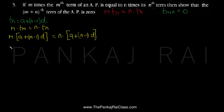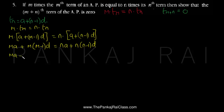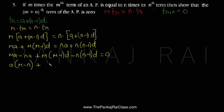Opening the brackets, we get: m·a plus m(m−1)·D equals n·a plus n(n−1)·D. Taking everything to the left-hand side: ma minus na plus m(m−1)·D minus n(n−1)·D equals zero. Here a is common, giving (m−n), and D is common, giving m(m−1) minus n(n−1), all equal to zero.